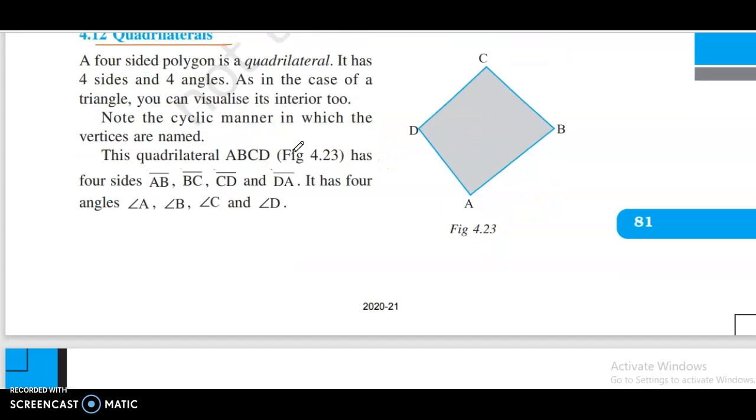Quadrilaterals. A four-sided polygon is a quadrilateral. It has four sides and four angles. As in the case of a triangle, you can visualize its interior too. Note the cyclic manner in which the vertices are named. This quadrilateral ABCD has four sides: AB, BC, CD, and DA. It has four angles.